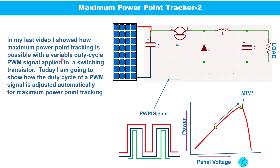In my last video I showed how maximum power point tracking is possible with a variable duty cycle PWM signal applied to the switching transistor. Today I am going to show how the duty cycle of the PWM signal can be adjusted automatically for maximum power point tracking.